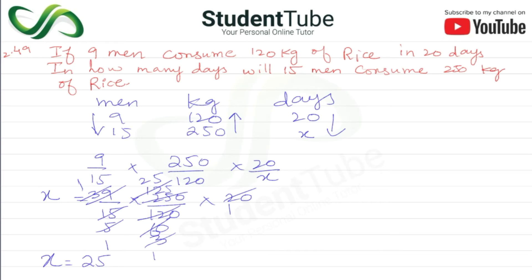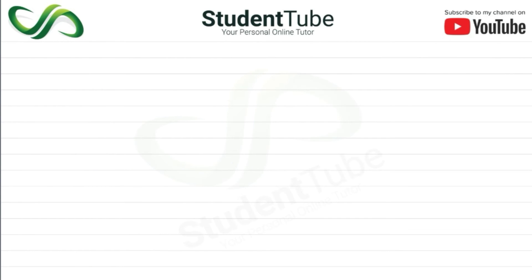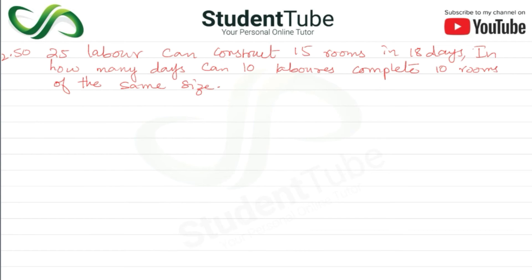So the answer is 25 days — 15 men will consume 250 kg of rice in 25 days. Moving on to Question 2.50: 25 laborers can construct 15 rooms in 18 days. In how many days can 10 laborers complete 10 rooms of the same size?